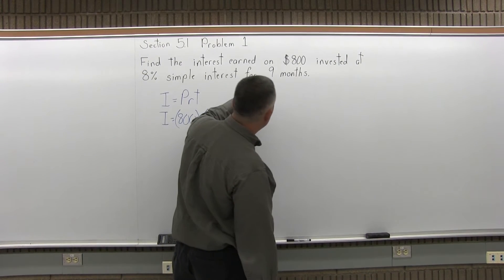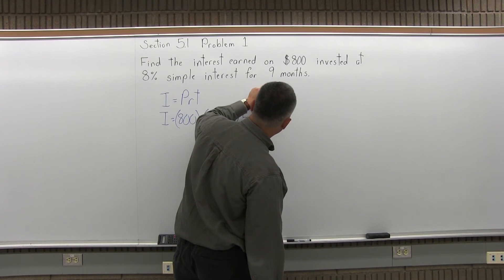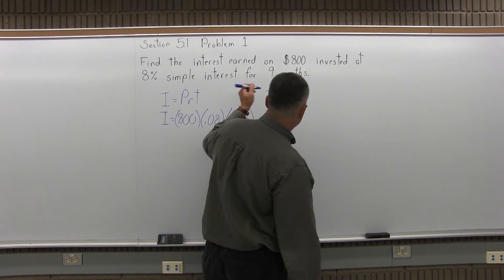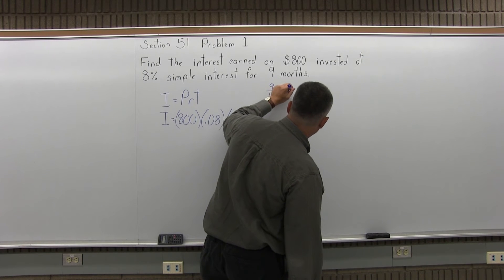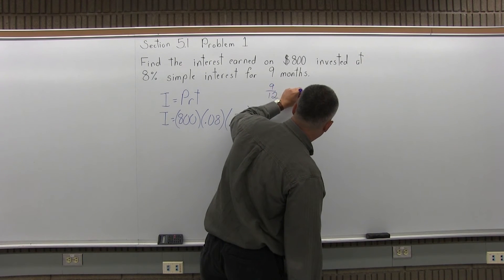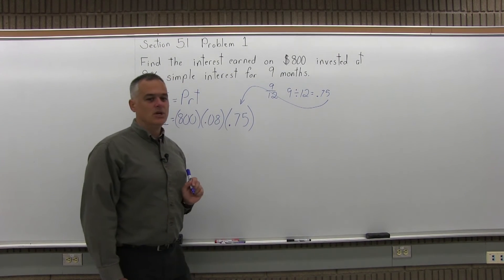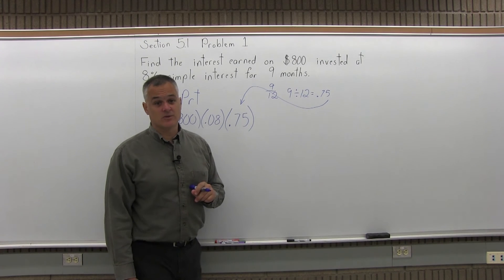But if you don't happen to know that, 9 months is 9 twelfths of a year, and that reduces to 3 quarters. Or with your calculator you can even do 9 divided by 12 equals, and the calculator will tell you that it's 0.75. So that's where the 0.75 comes from.